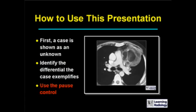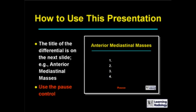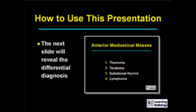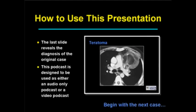How this presentation works is: first, the case is shown as an unknown. You are to identify the differential that the case exemplifies — use the pause control on your computer or MP3 player. The next slide will be the title of the differential. In this case, anterior mediastinal masses. Again, use the pause control. The next slide will reveal the differential diagnosis, and the last slide reveals the diagnosis of the original case shown.